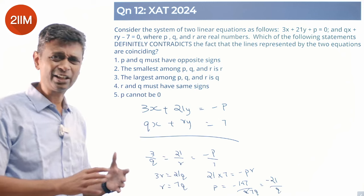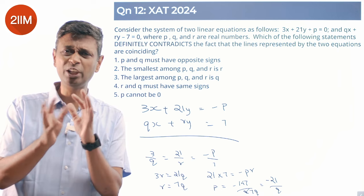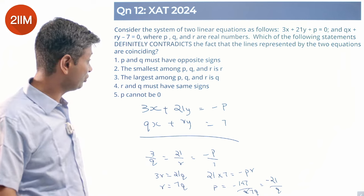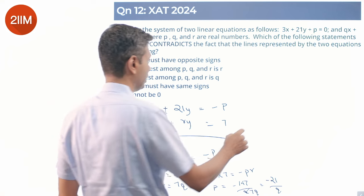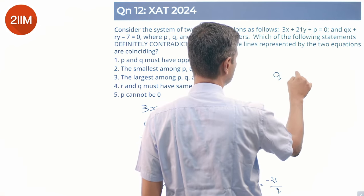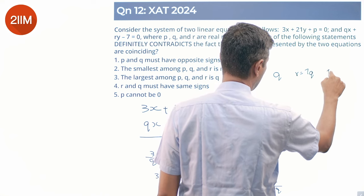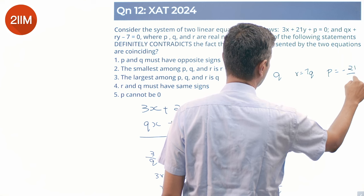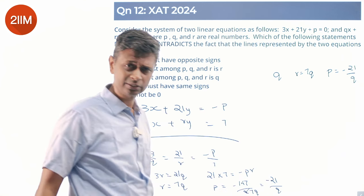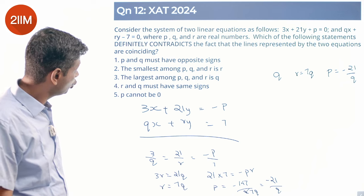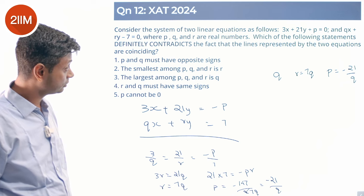You've got everything in terms of one thing. There's a link between p, q, and r - some relationship p, q, and r have. So if the lines coincided, then we can say q is q, r is equal to 7q, p is equal to minus 21 by q. Nice, wonderful. P and q must have opposite signs - yes, they must have.